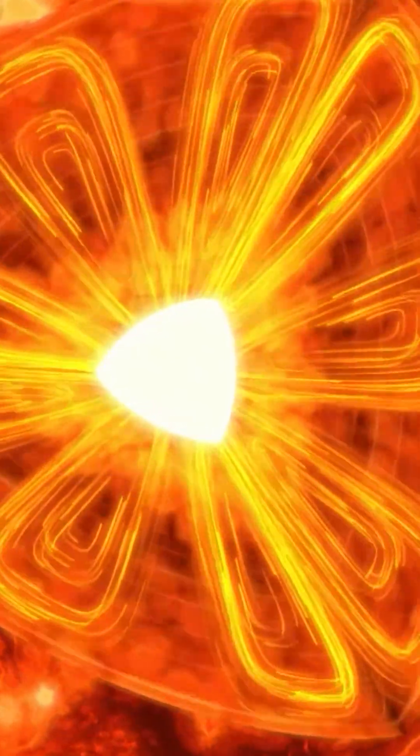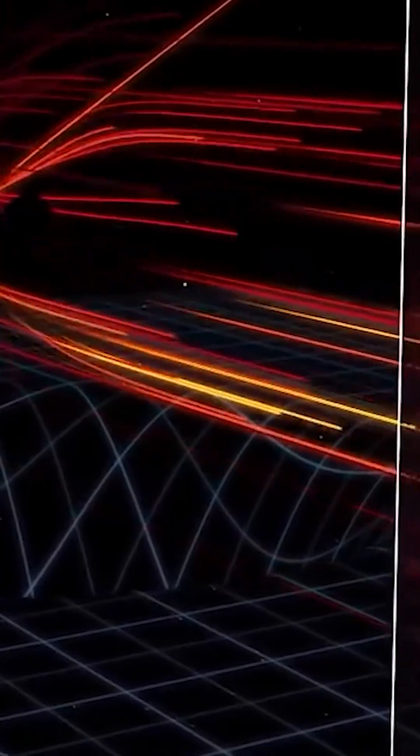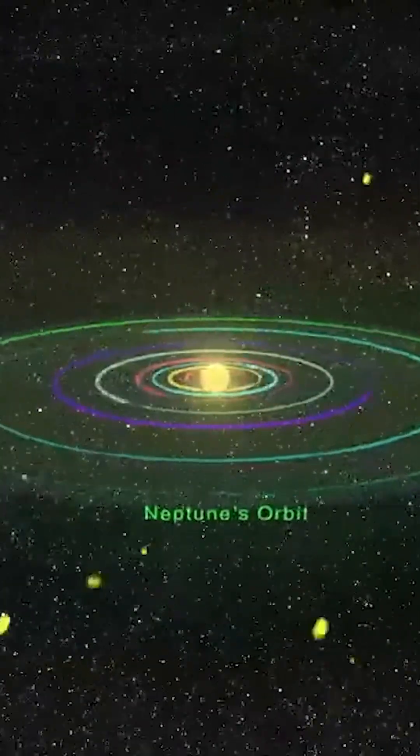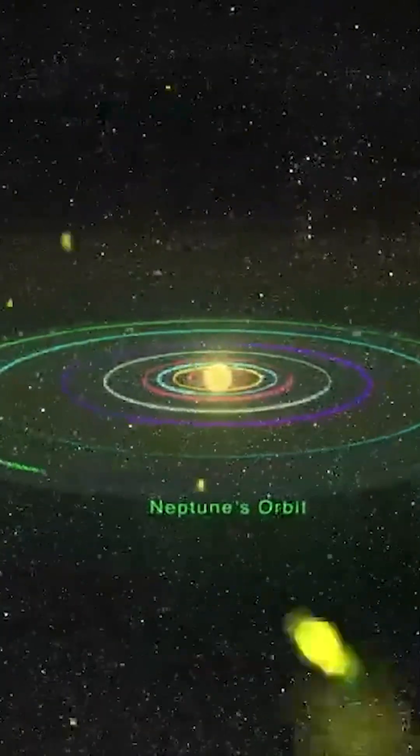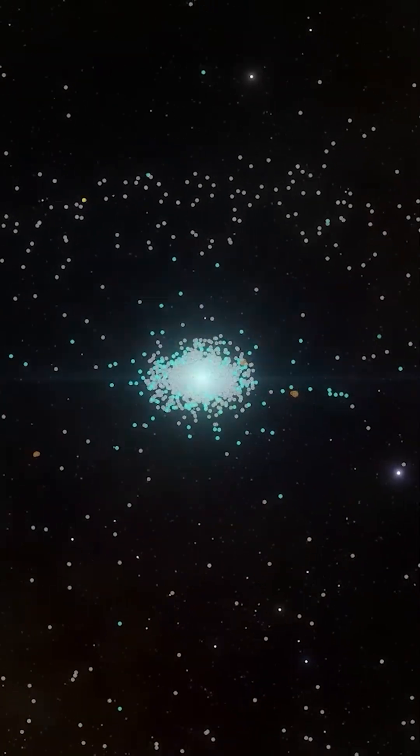We've come to understand how stars are born, and we can even measure black holes. But when it comes to what lies beyond Neptune, the last known planet of our solar system, we're still mostly in the dark.